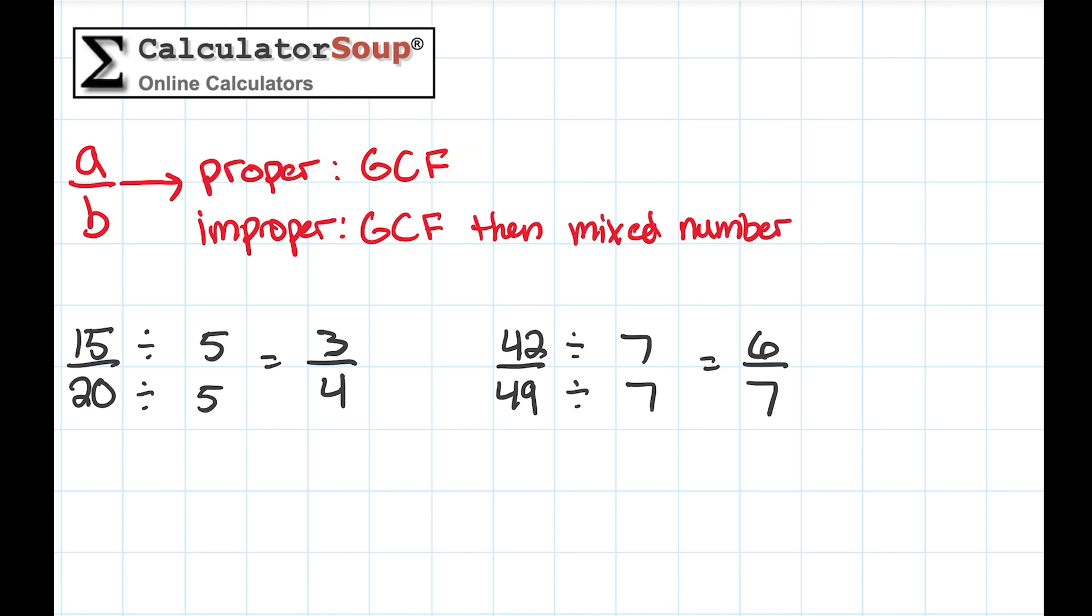Next, let's look at the second option for simplifying fractions, where we have an improper fraction, or in other words, the numerator is larger than the denominator. Remember, in this case we have the extra step of converting the reduced fraction to a mixed number. To convert a fraction to a mixed number, divide the numerator by the denominator using long division with remainders. Write down the whole number result, and then use the remainder as the new numerator over the denominator.